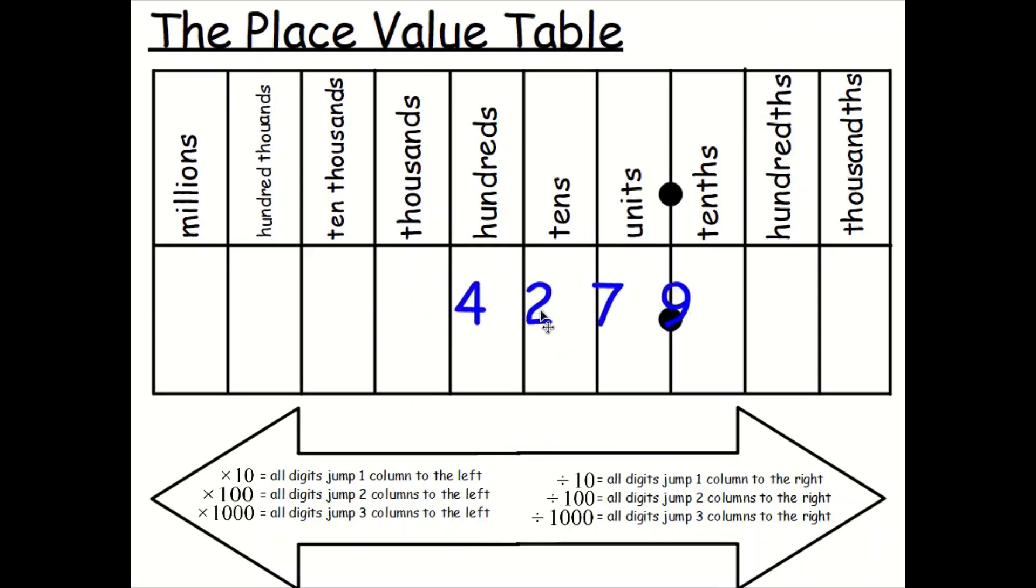So what's that number? 42.79. What happens if we multiply that by 10? Well, again, all digits jump one column to the left. What's the answer? It is 427.9. So we haven't really added a zero there, have we? But it has moved in the place value table. It's jumped one column to the left in the place value table, and we get 427.9.